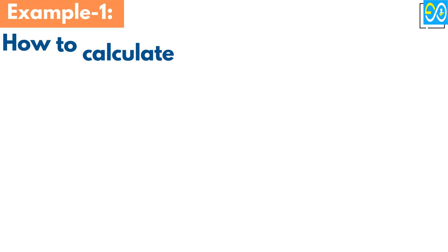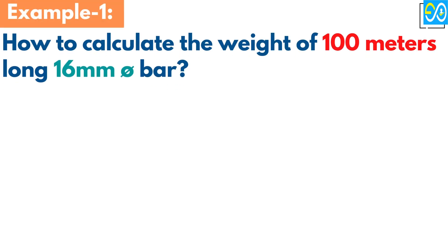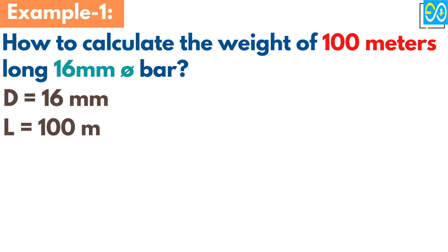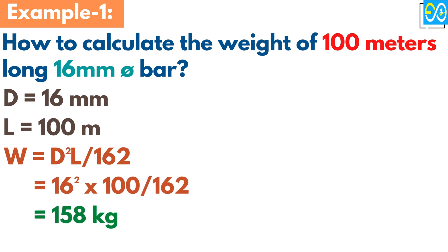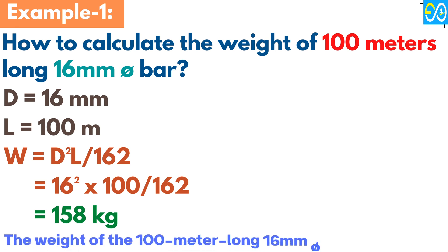Example 1: How to calculate the weight of a 100 meters long, 16 millimeters diameter bar. In this example, d equals 16 millimeters and l equals 100 meters. So, w equals d squared times l over 162, equals 16 squared times 100 over 162, equals 158 kilograms. The weight of the 100 meters long, 16 millimeters diameter bar is 158 kilograms.